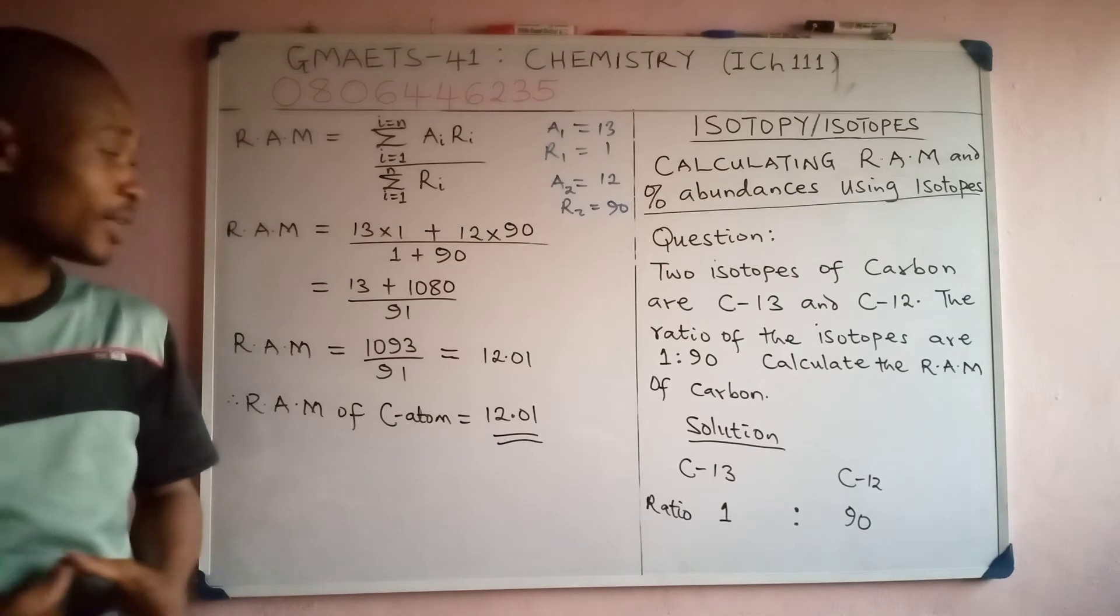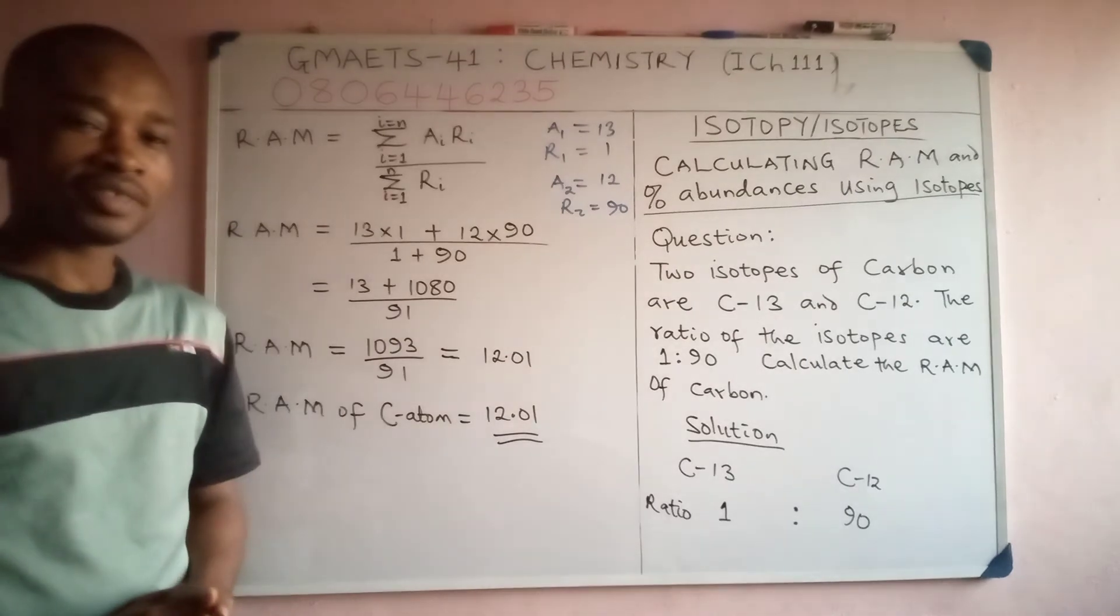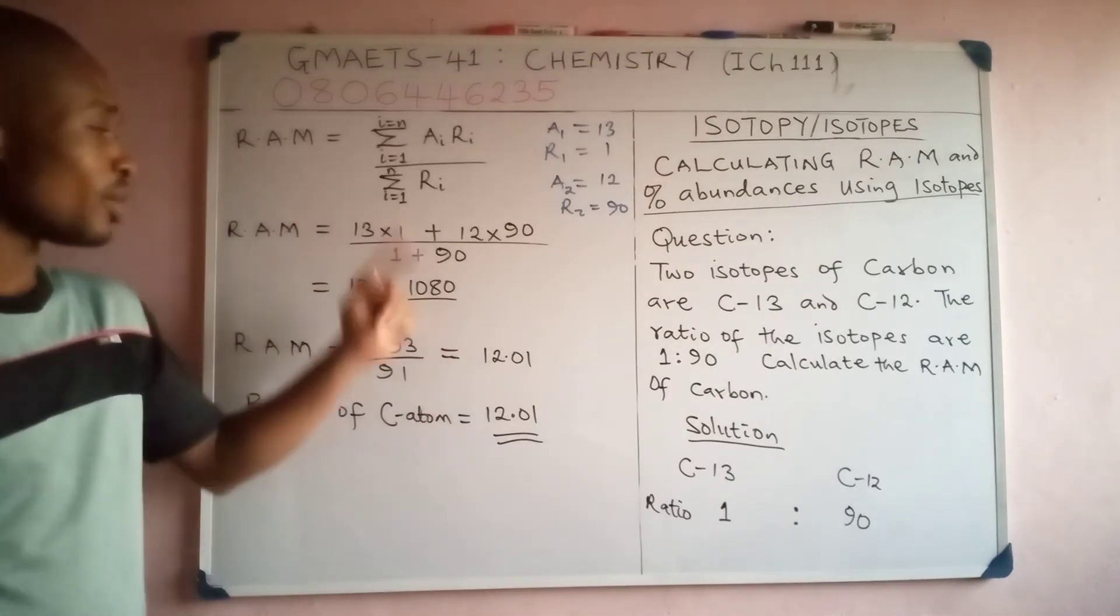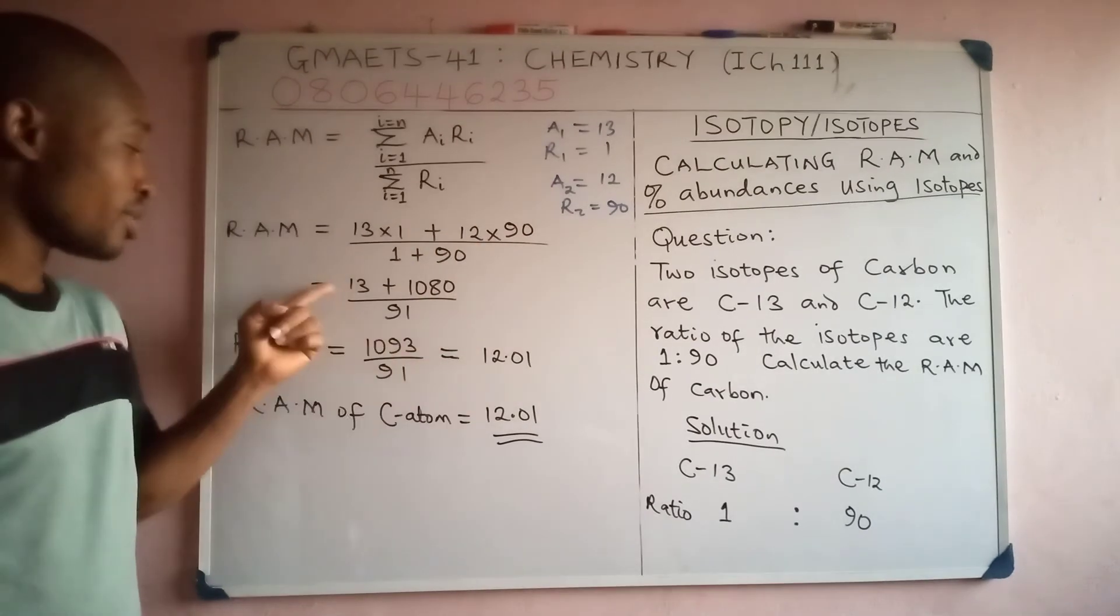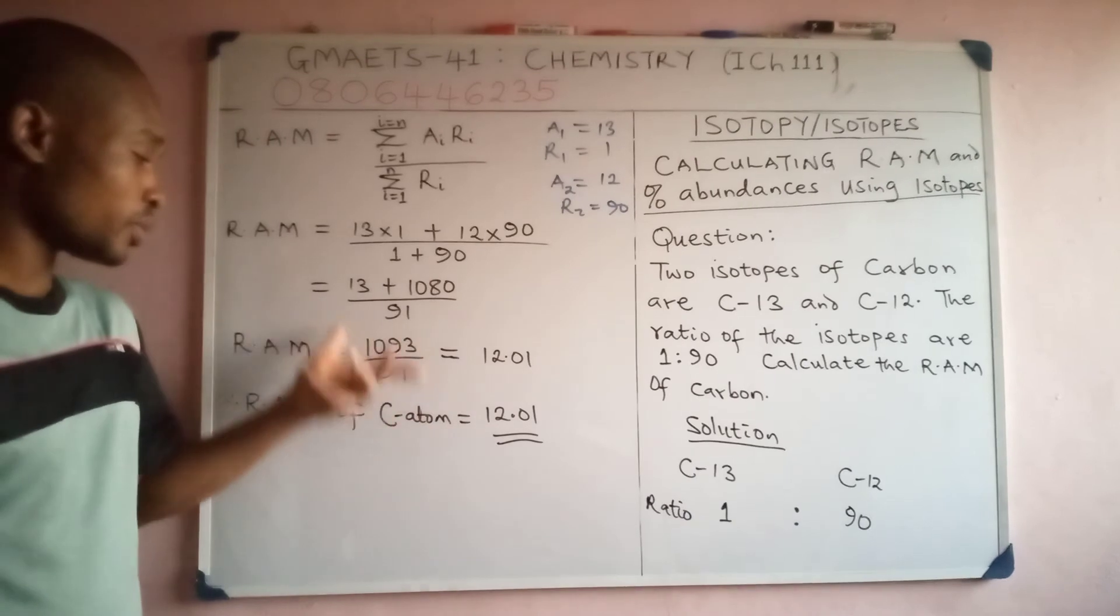What you need to do is just punch your calculator: multiply 13 by 1, 12 by 90, all over 1 plus 90. You have it here. If you work through this, you're going to have the RAM of carbon to be 12.01.